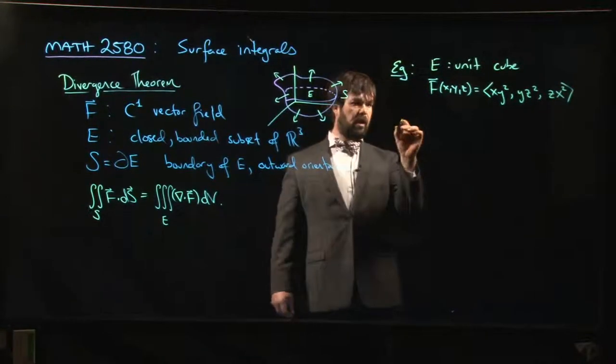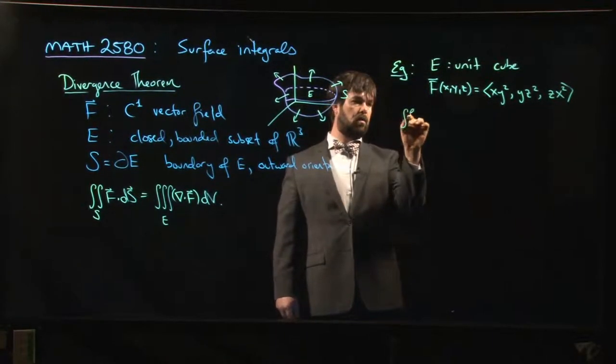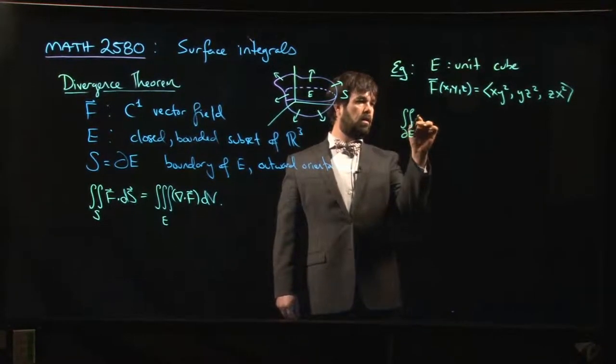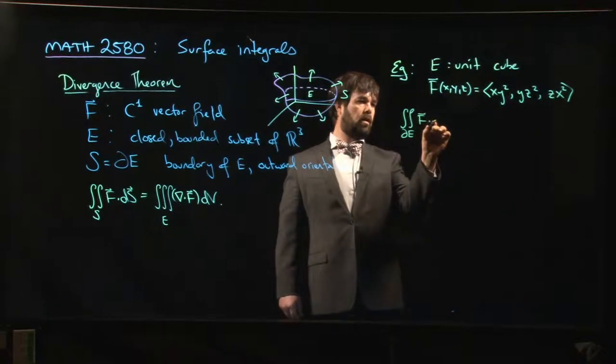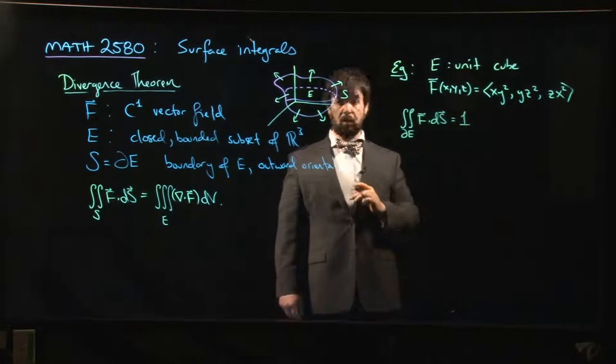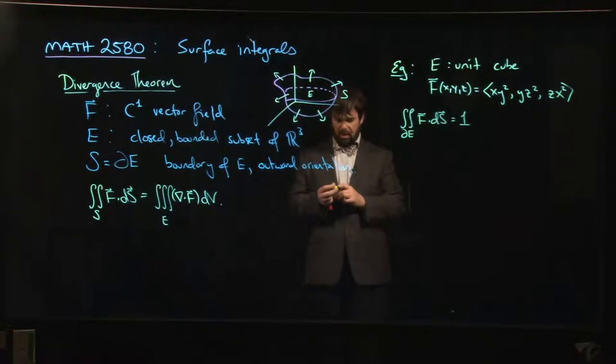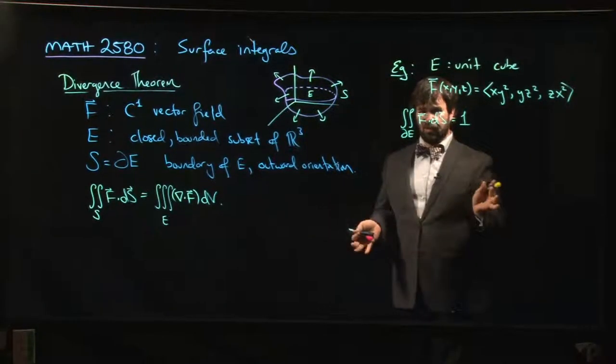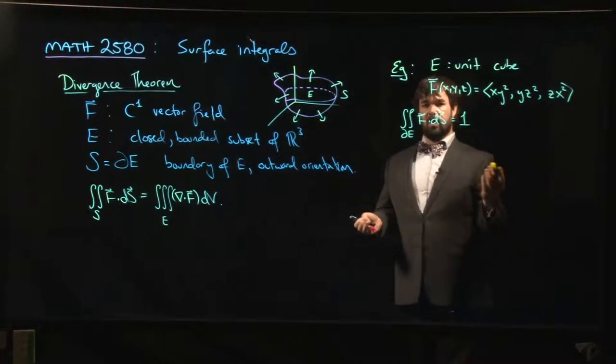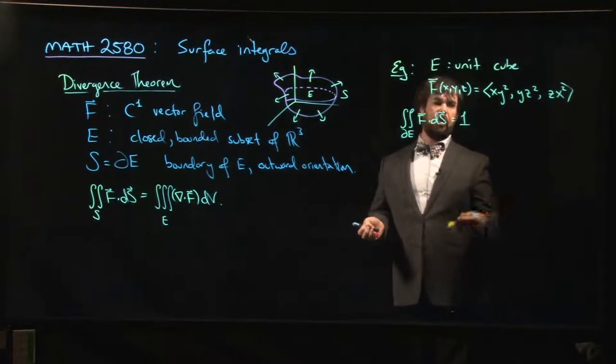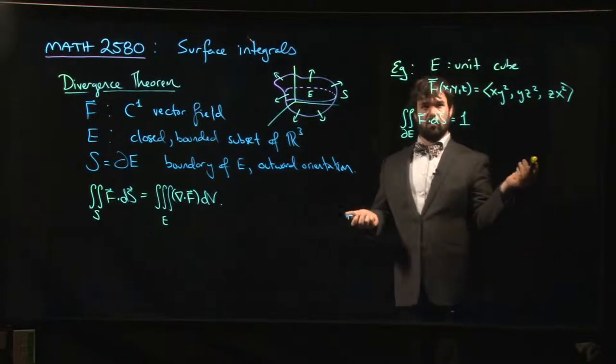We worked out in a previous video, we saw that the integral over the boundary of E of F dot dS, we already computed that this integral was one, right? But it's a fair amount of work because there are six faces, right? The cube has six faces. We had to do one integral for each face. We found that the integral was zero across three of the faces, one-third across the other three. We add it all up, we got a total value of one.